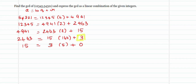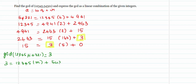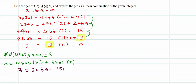Therefore, the GCD of 12345 and 54321 is 3. Now I need to express this 3 as 12345 times some integer M plus 54321 times some integer N. Backtracing requires 3 steps. Begin with 3: this 3 can be replaced by pushing everything to the left as 2463 minus 15×164.